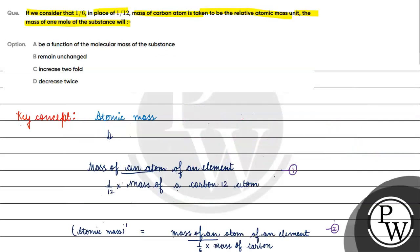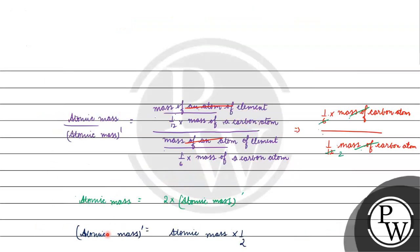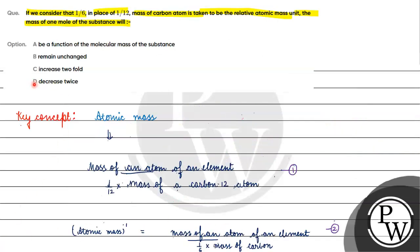So what did we say? If we consider 1/6 instead of 1/12, then the mass of 1 mole of substance will decrease twice. So option D will be the correct answer for this question. I hope you understood it well — thank you and all the best.